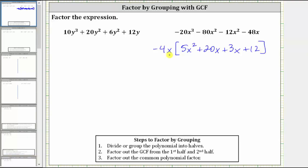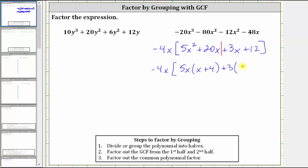We can check this by distributing negative 4x if needed. Now we factor the polynomial inside the parentheses using the factor by grouping technique. First, divide the terms in half: two terms on the left, two terms on the right. The greatest common factor of 5x² plus 20x is 5x. We factor out 5x from the first two terms, which leaves us with x plus 4, and we can check by distributing. We then factor out the greatest common factor from 3x plus 12, which is 3, leaving us with x plus 4.